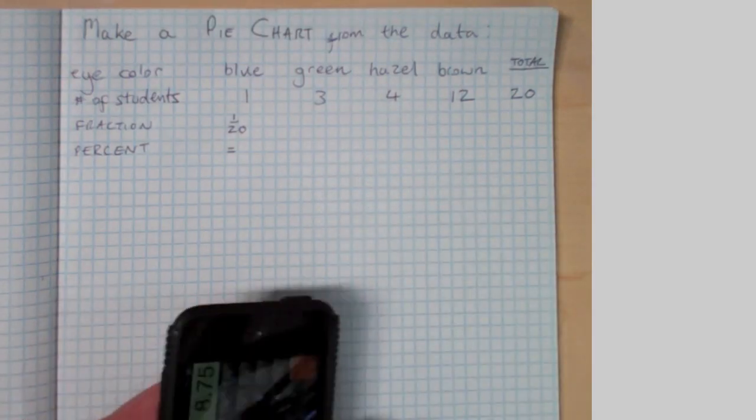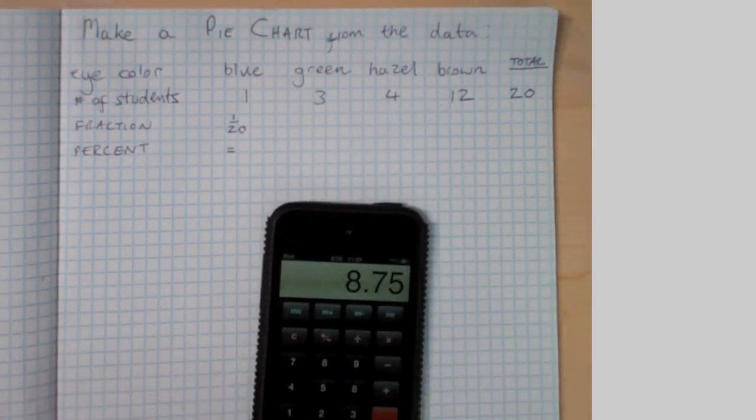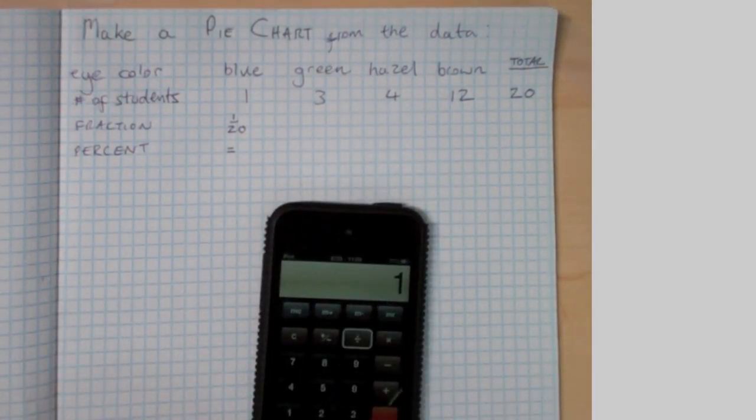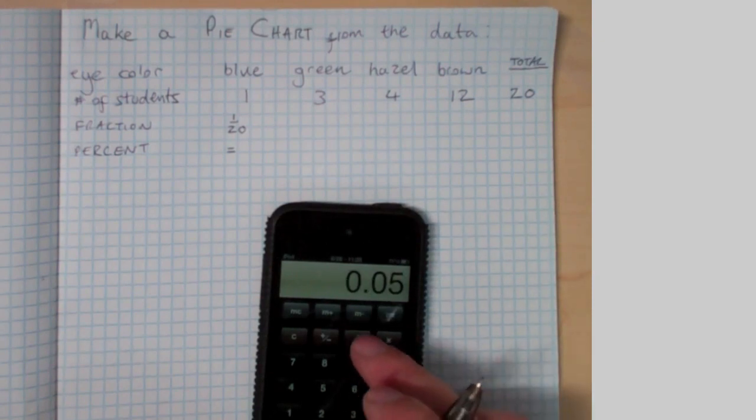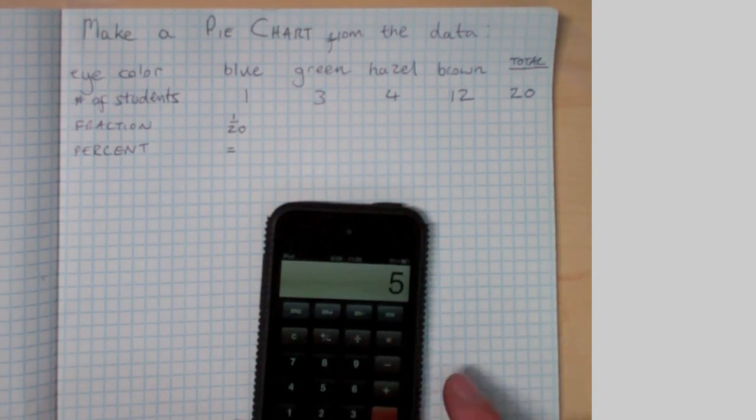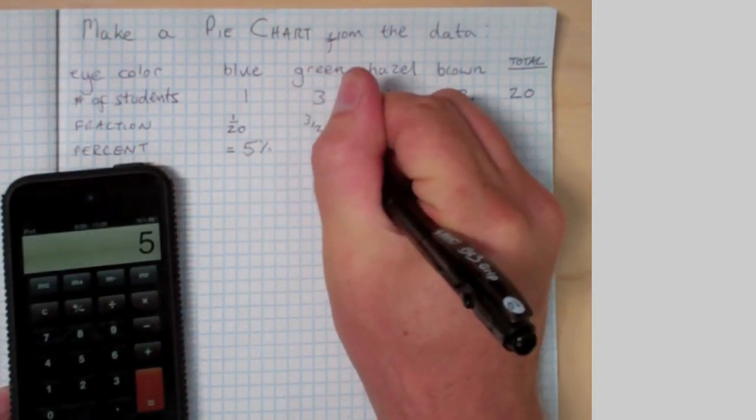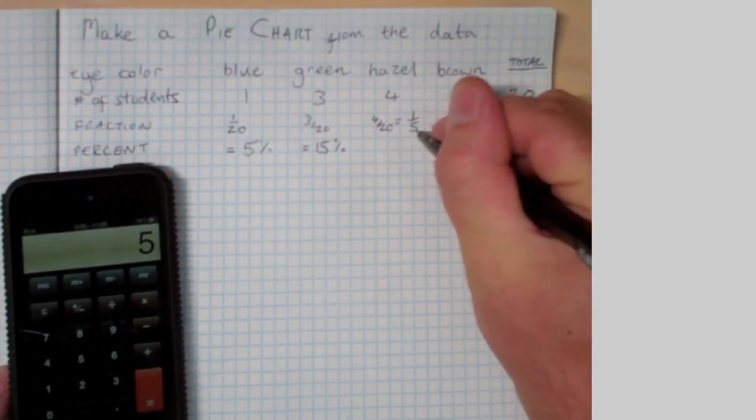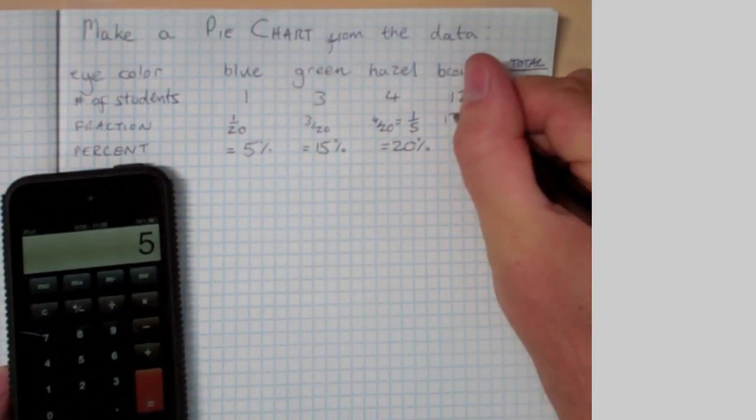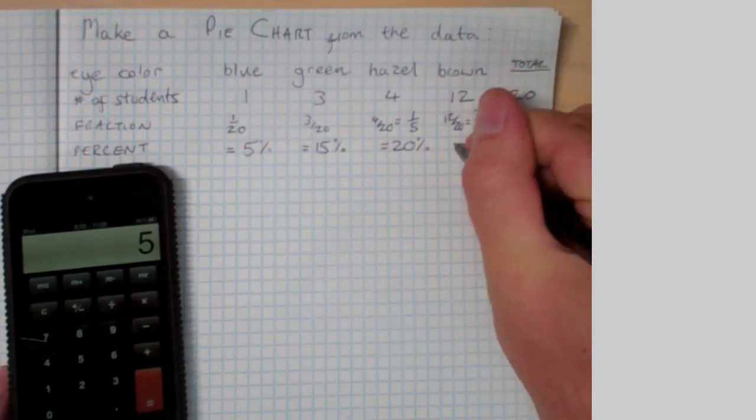So the first thing is we've looked at the fraction of blue. It's one kid out of 20, one twentieth. We can quickly figure out that that is equal to five percent of the total class. With green it's three out of 20, fifteen percent, and so on. We get the percentages and we can do a quick check to make sure they add up to a hundred percent.